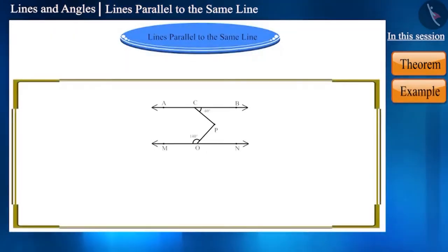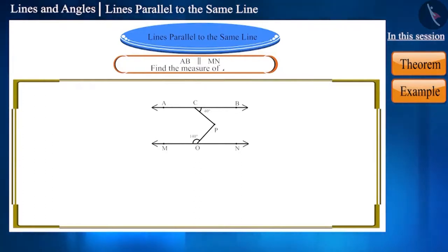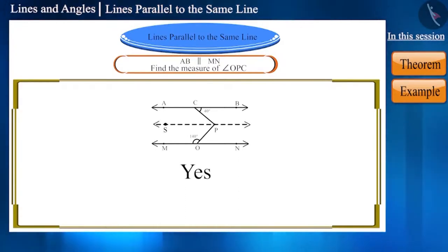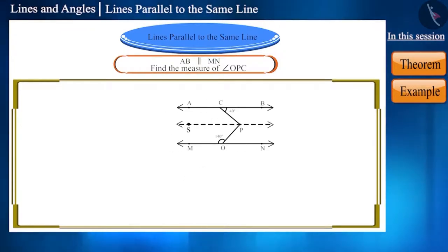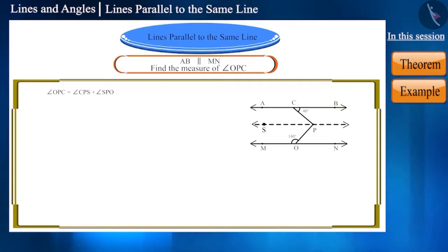Now see this figure. Lines AB and MN are parallel. Can you find the measure of angle OPC? Yes — we can draw a line SP through point B which is parallel to line AB. Now look at the figure: angle OPC is made up of angle CPS and angle SPO. We can write it like this.